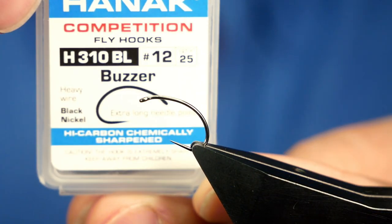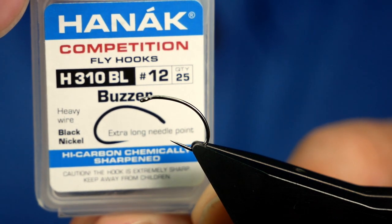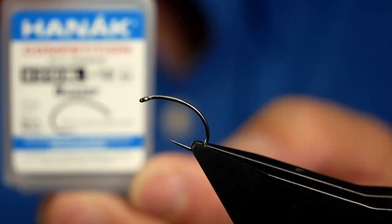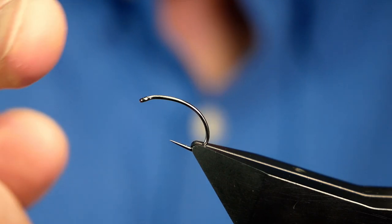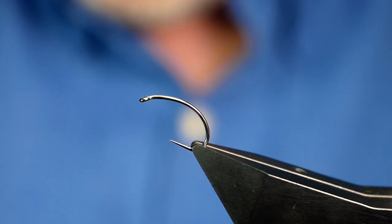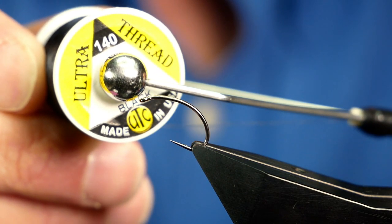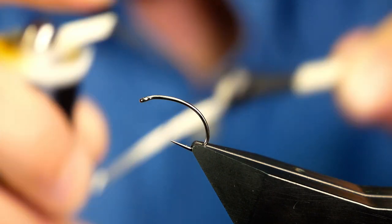In the vise then is a Hanak H310 barbless hook. This one's at size 12. It's on a heavy wire and it's in black nickel. Now the heavy wire's going to help us. I want quite a heavy fly here. The thread I'm going to be using today is the UTC Ultra. It's in 140 denier and as you can see it's black.